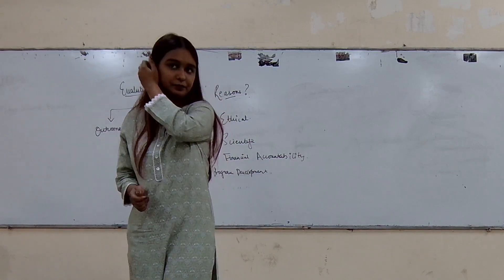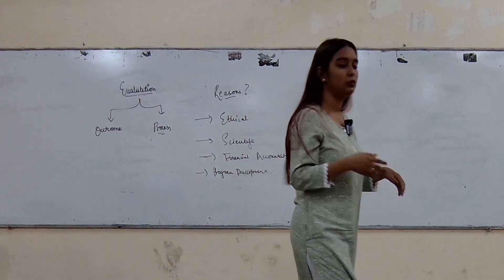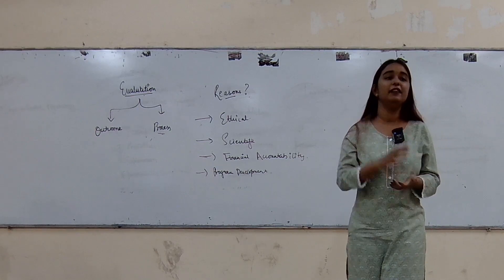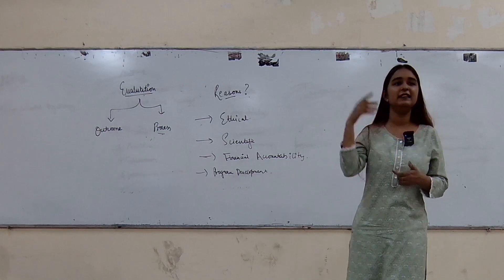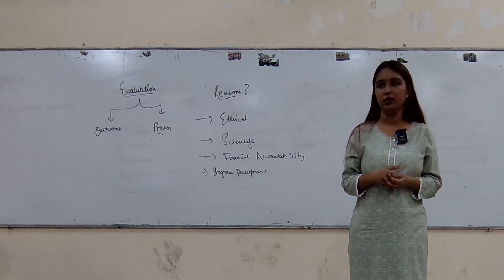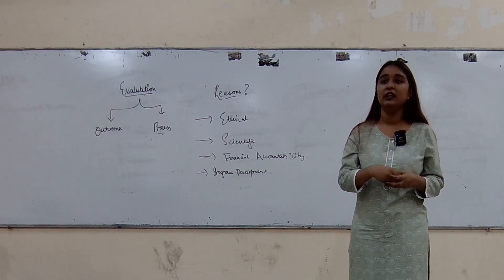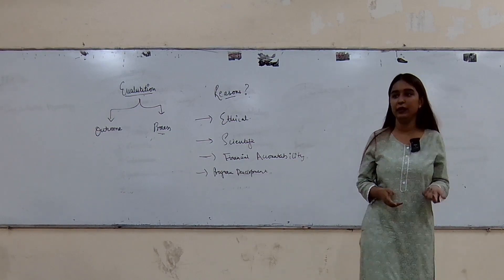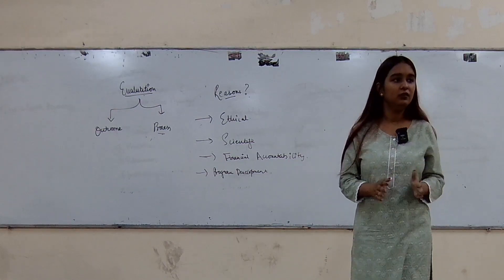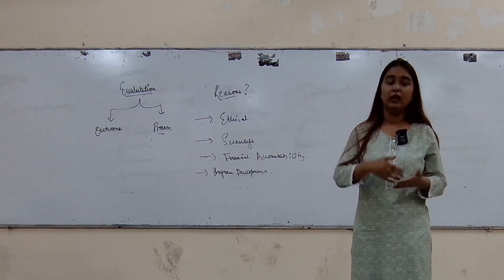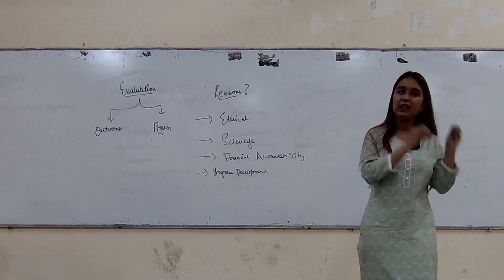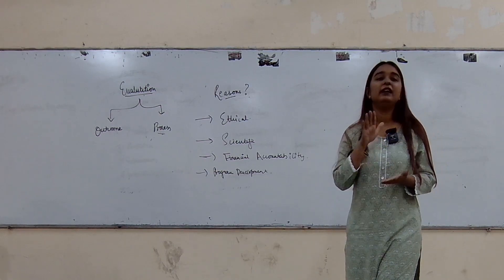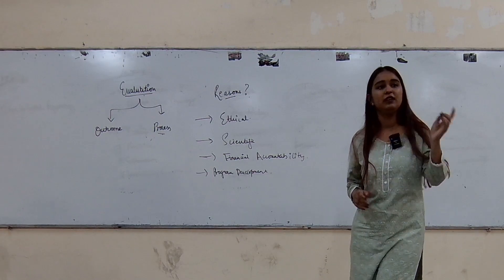Then we talk about financial accountability. Any intervention in society requires resources — either your own or funding from a government or NGO. Finances are involved somewhere. All the stakeholders in that intervention need to know where the money was spent. There needs to be financial accountability — a responsibility with regards to the finances utilized in your intervention.